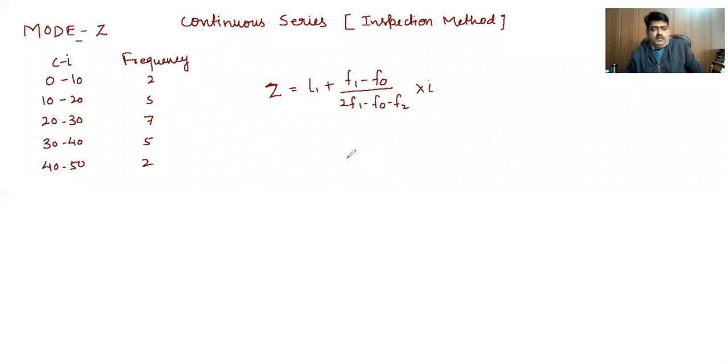Dear students, now we will learn a question of continuous series with the help of the inspection method. You can see I have taken one question on your screen. The class interval is given: 0 to 10, 10 to 20, 20 to 30, and so on. The frequency is also given: 2, 5, 7, 5, 2.